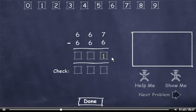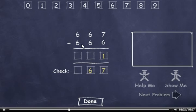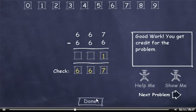Now let's check it. 6 plus 1 is 7. 6 plus 0 is 6. And 6 plus 0 is 6. This number matches up, so I'll click Done. Next Problem.